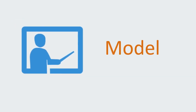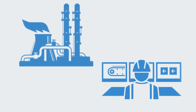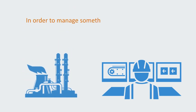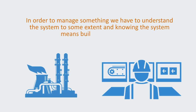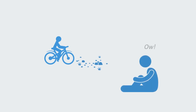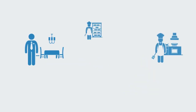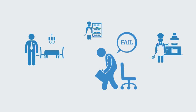Firstly, we need some kind of model to the system we wish to manage. You can't begin to try and manage something if you don't know whatever it is you wish to manage. In order to manage something, we have to understand the system to some extent, and knowing the system means building up a model to it. The first time we get on a bike and try to manage the cycle, we fall off, because we don't really understand how that system behaves. If you were sent in to manage a busy restaurant tomorrow without any experience of it, the outcome would be almost certainly a failure, because you have no model for how that system operates.